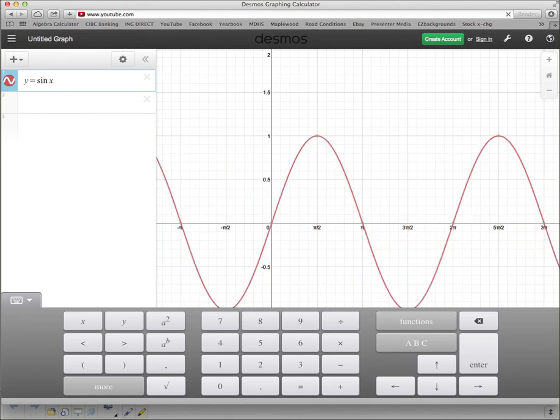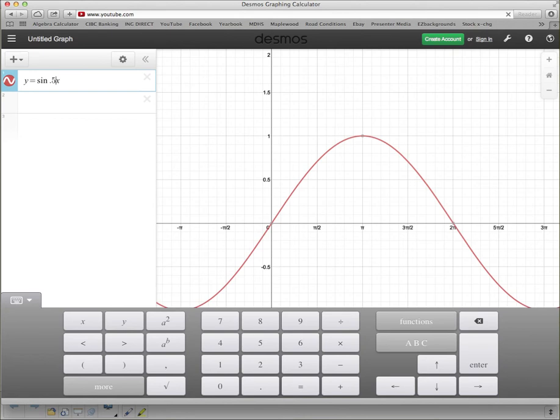So putting something in here corresponds to a compression. Now if I take that away again and it's just 1, if I put something in there that's less than 1, like say 0.5, it's going to stretch my period length out. So we divide the period by the number that's in front of that. So dividing by 0.5 is the same as multiplying by 2, which means that this period length is twice as long as it used to be.